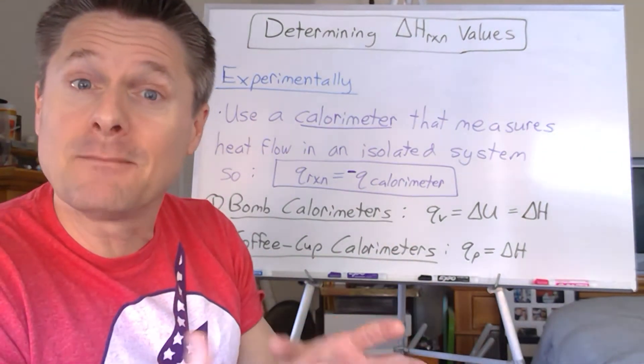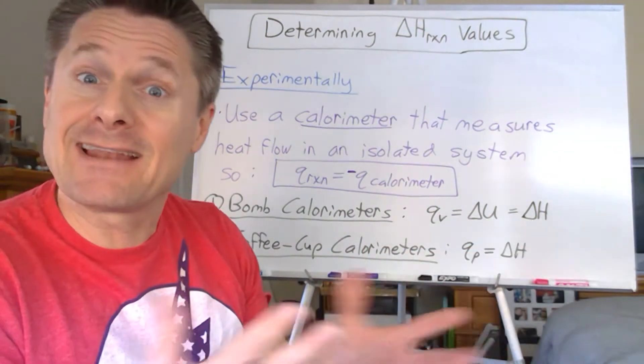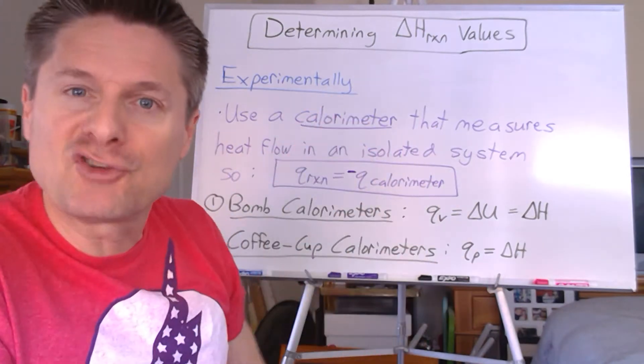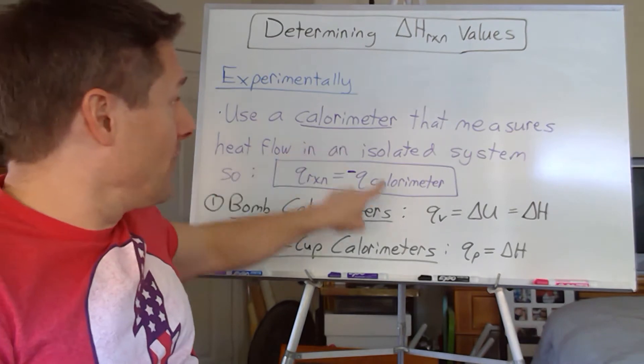That's kind of important when you're doing thermochemistry. We want to know the heat flow between system and surroundings, or if it's an isolated system, that system, since if it's isolated, the heat can't escape to the surroundings. So the system's temperature will increase if it's exothermic or decrease if it's endothermic.